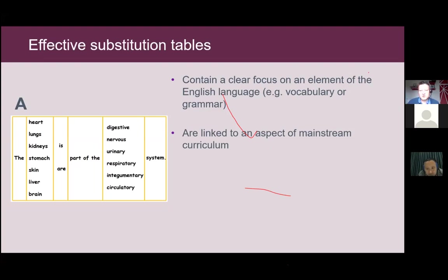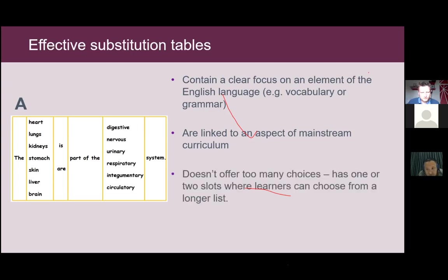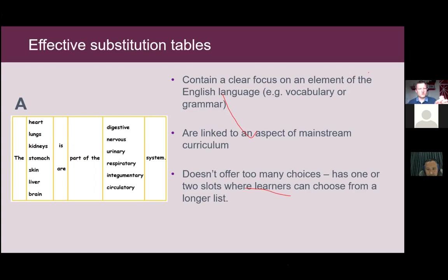You'll also notice that in table B there are too many choices — in the second column there's a choice of five different tenses, which is just going to confuse the majority of students. Remember, the aim of a substitution table is to reduce the cognitive load. So the list of choices should either be quite limited, especially if it's new language, or if it's a longer list, we should be using words that learners have encountered before, or where we've provided visuals or translations — otherwise they'll be too busy figuring out what words mean to even think about sentence structure.